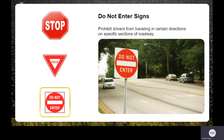The do not enter sign prohibits drivers from traveling in certain directions or specific sections of roadway, to keep us safe from going the wrong way on a one-way street or entering the expressway incorrectly. These signs are white squares with a red circle and a white bar. If we don't follow them, they could lead to the worst type of crash — a head-on collision from going the wrong way against traffic.